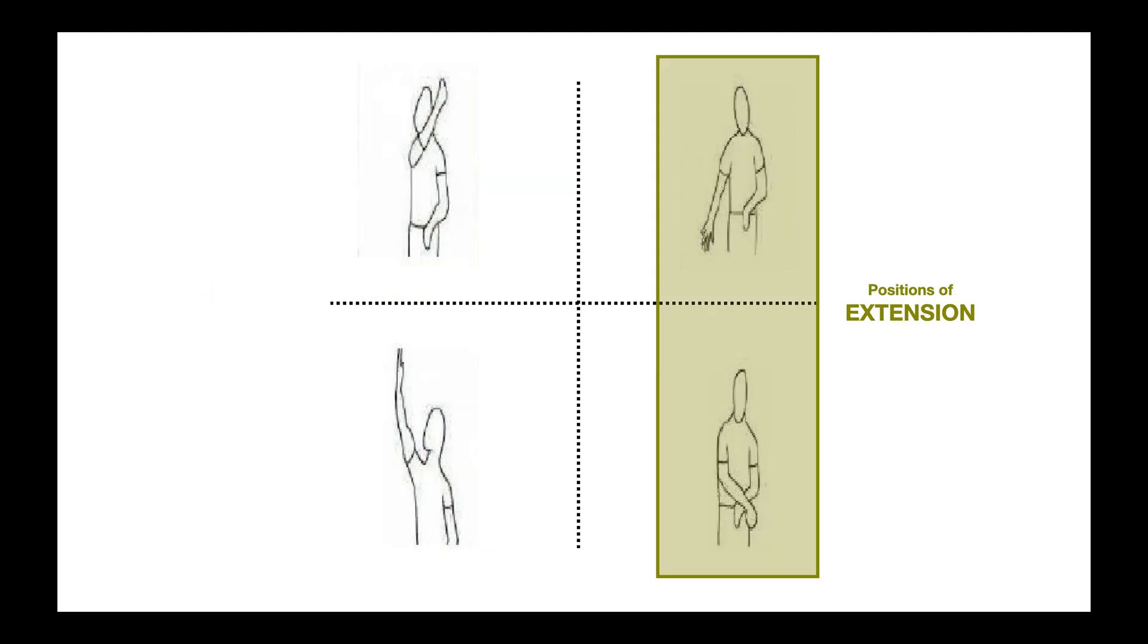When the arm comes down by the side, like you see here in the gold, the shoulder is now in a position of extension. So these two are my extended positions. Again, it doesn't really matter what the elbow is doing or what the wrist is doing. It's the shoulder. So arm is down by the side. So these are positions of extension.